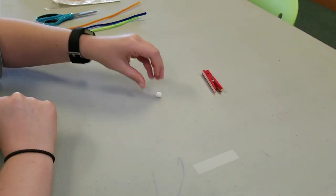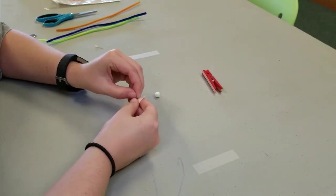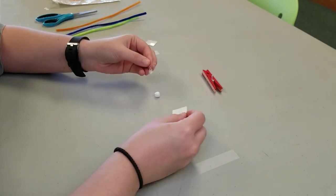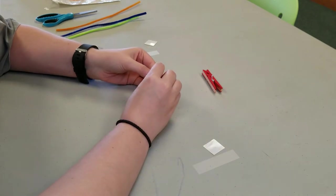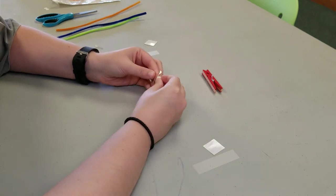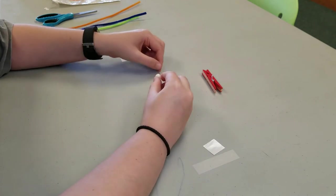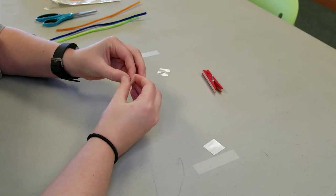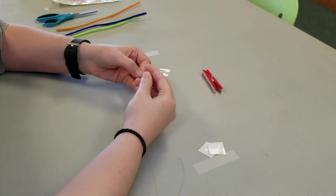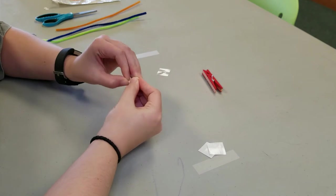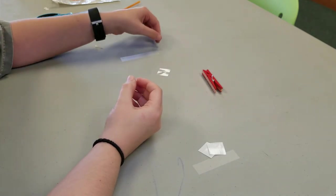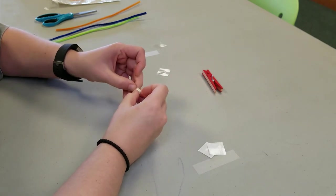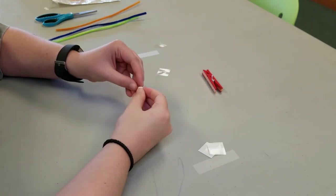In the second part of the project, we will take our foam ball and stick one glue dot on one side of the ball, and then take the other glue dot and stick it to the opposite side of the foam ball. Once the glue dots are in place, take your LED light, separate the legs, and stick one leg to each glue dot.